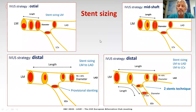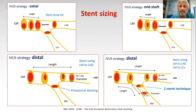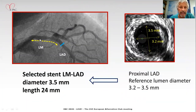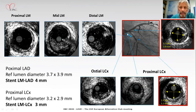Stent sizing is important. I suggest in these cases the use of the lumen, or the distal landing inside lumen — usually LAD, sometimes circumflex — to size the stents properly. Afterwards, after implantation, we have to tailor the stent size to the left main with the POT. In this case, with a provisional stent from LAD to left main, the distal landing site in LAD is this segment here with 3.5 and 3.2 mm diameters, so the stent diameter selected is 3.5, and 24 mm is the length, based on the IVUS examination.